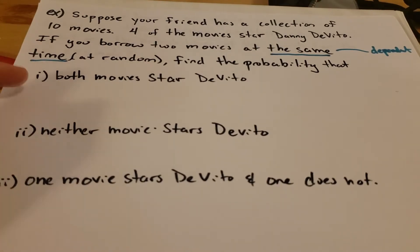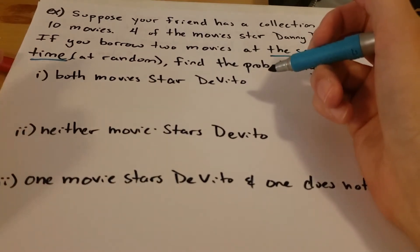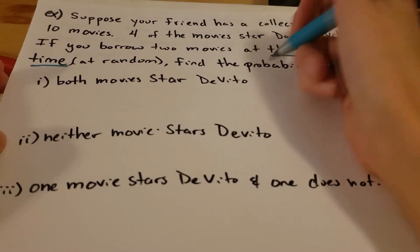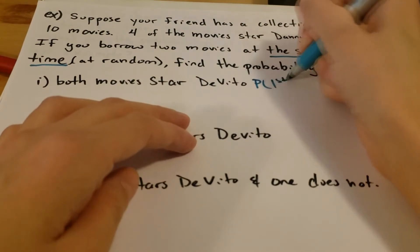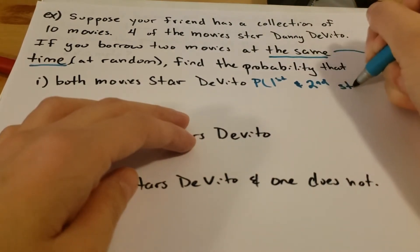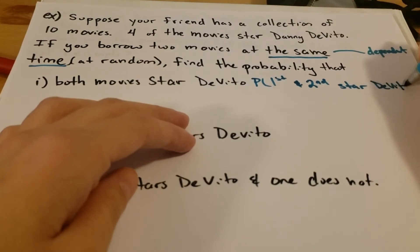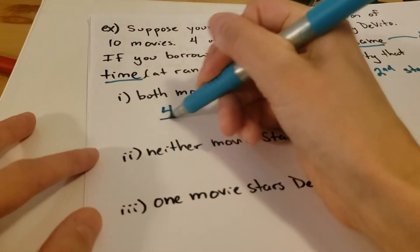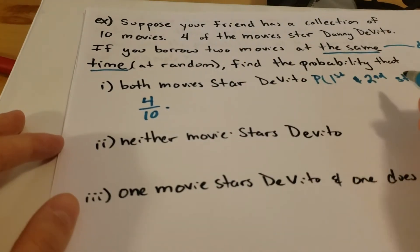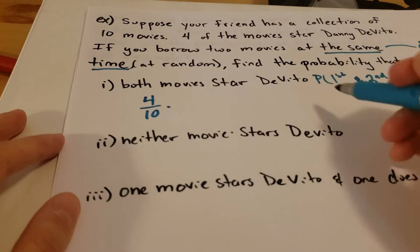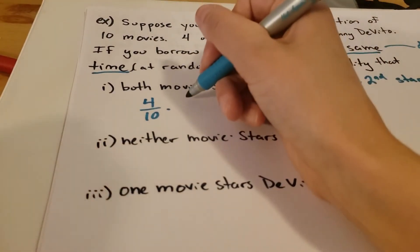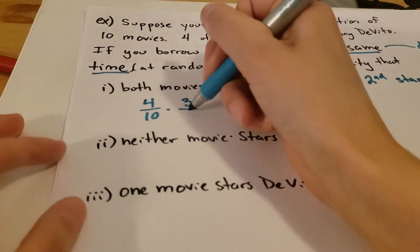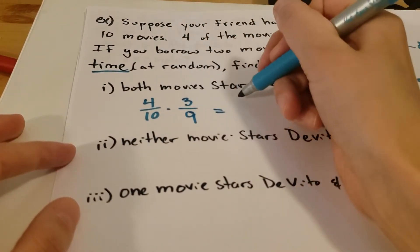This is going to affect how we solve the problem. If both movies star Danny DeVito, this is going to be the probability of the first movie starring DeVito and the second movie starring DeVito. The probability of the first one starring Danny DeVito is four out of ten. Then the probability that the second one also stars Danny DeVito — given the first one did — means we've removed one DeVito movie, so now there are only three left and only nine movies total. This multiplies out to give us 12 out of 90.